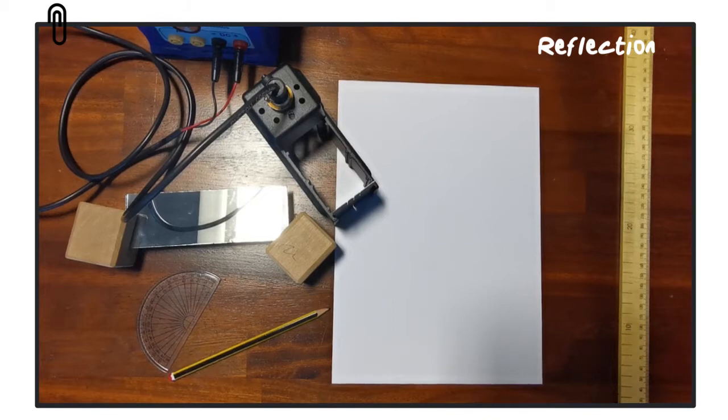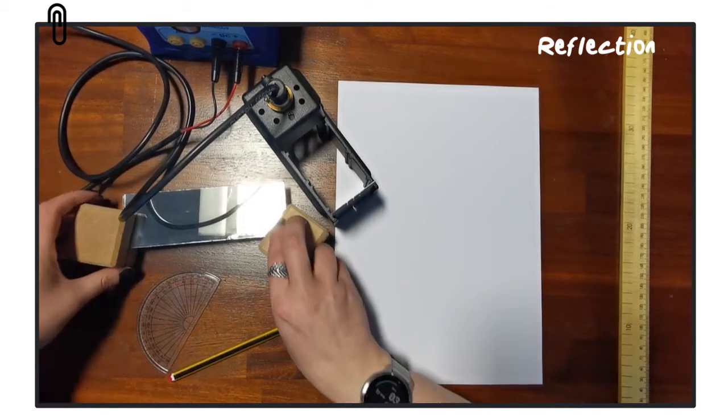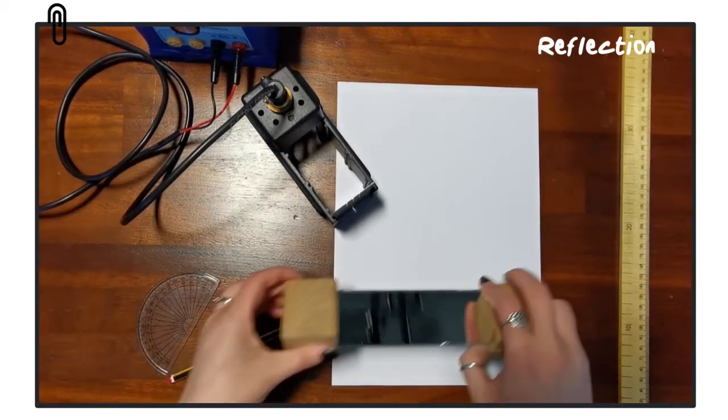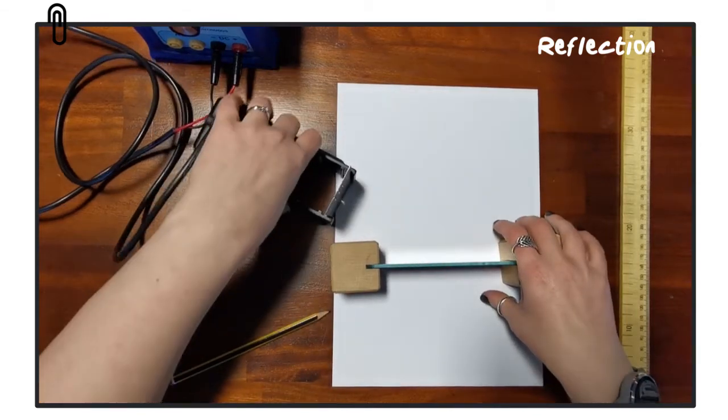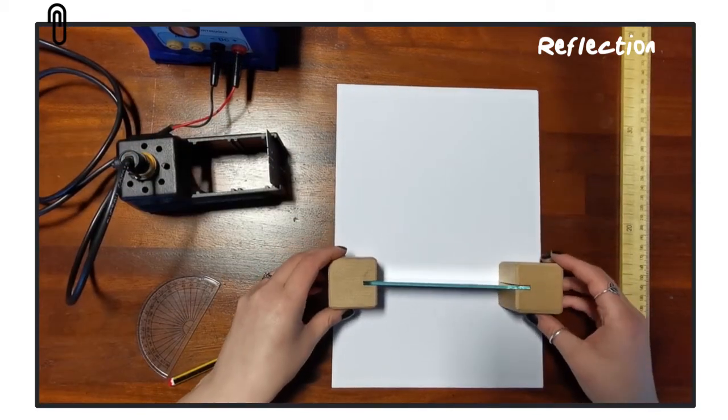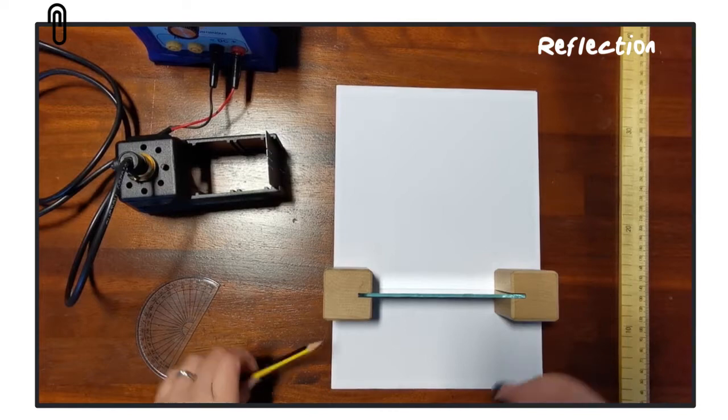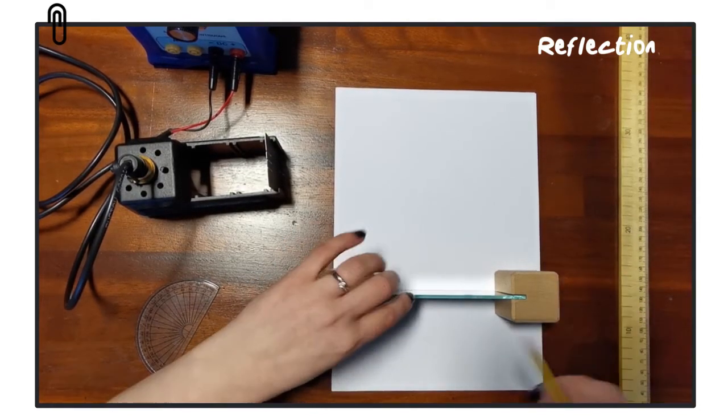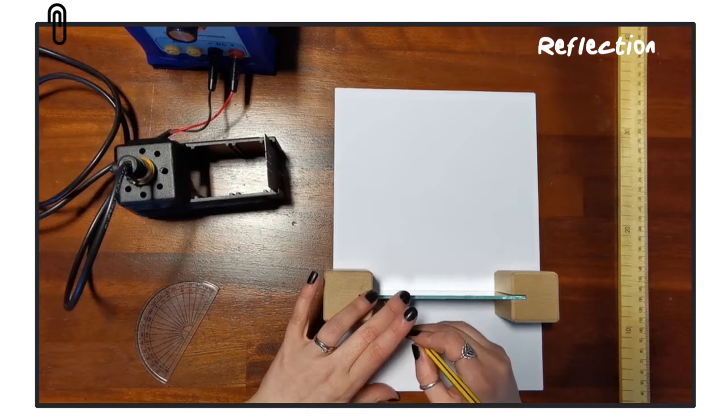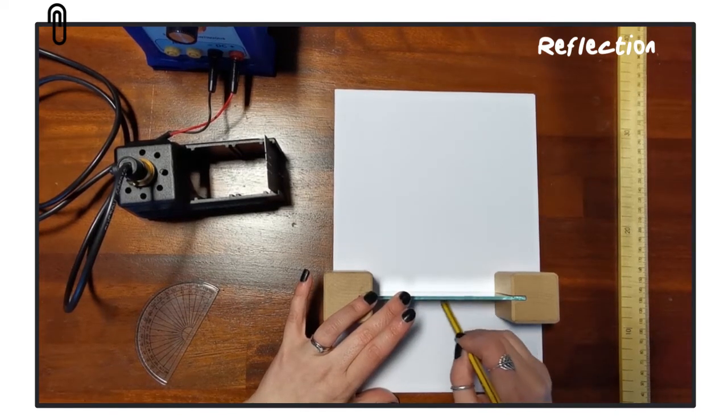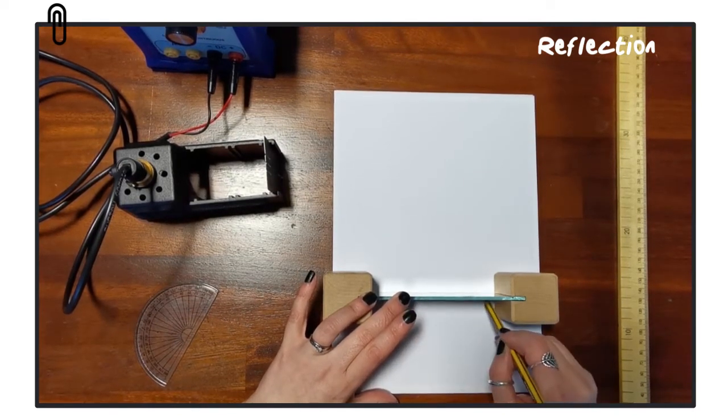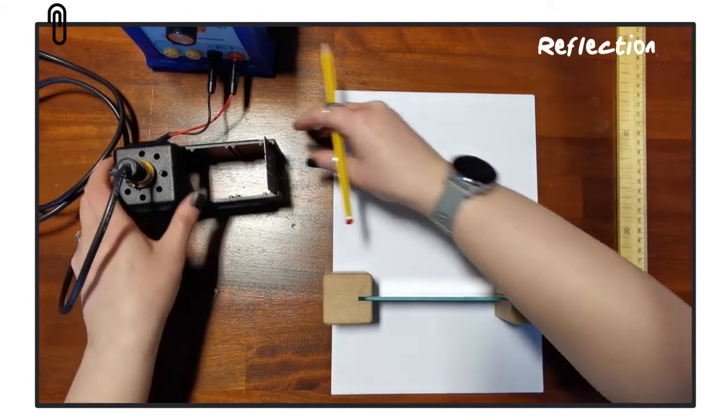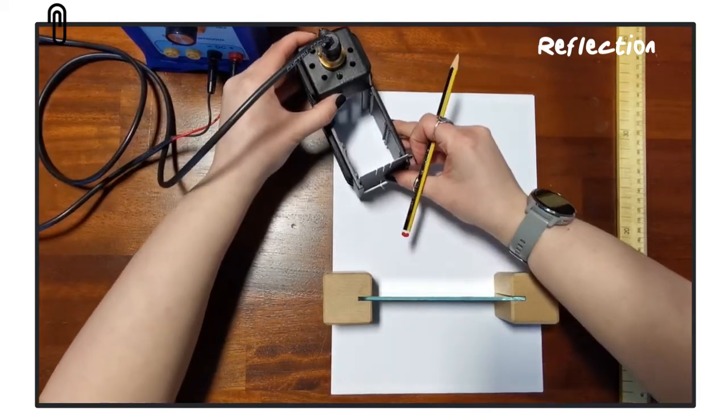So the first thing we're going to do is take the plane mirror and set it on top of the page so that it's upright, and I'm using the wooden blocks here in order to keep that glass stable. Then using a pencil I'm going to draw a line across the back of the mirror, and that's because this is the point where the reflection occurs, because the mirror is just a sheet of glass with a thin layer of foil at the back.